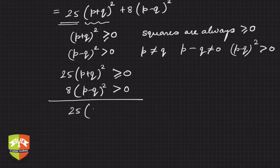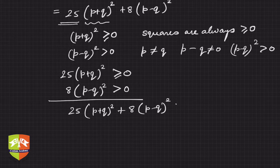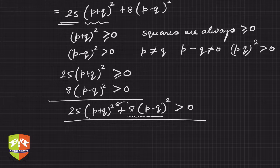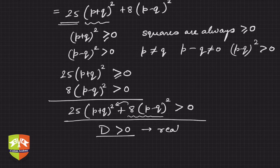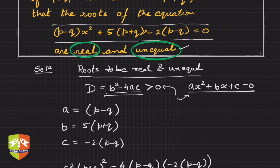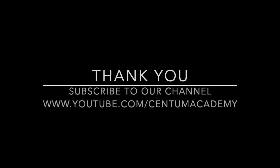Now if you add both terms, you get 25(p+q)² plus something which is greater than 0. So clearly the total will be greater than 0 — it will not equal 0, because the second term is always strictly greater than 0. Hence D > 0, which is the sufficient condition for real and unequal roots. So the given equation will always have real and unequal roots.